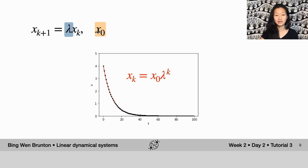As you can see here, because in the simple simulation, I've made it so that lambda is slightly less than 1, we have exponential decay.